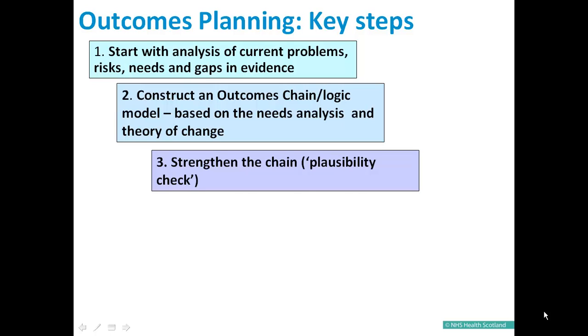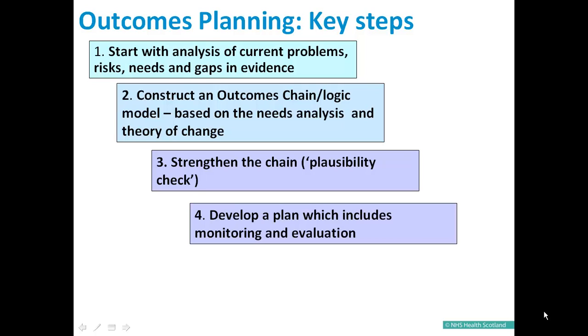This step involves checking the chain for plausibility in terms of the risks, assumptions, and evidence that we have to back up what our plans are saying. What we're saying here is what evidence do we have to support the rationale behind our plan?